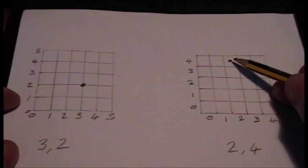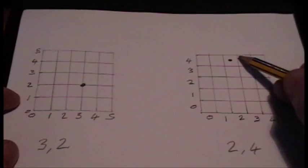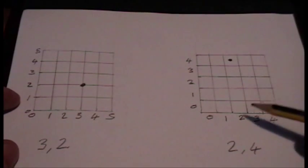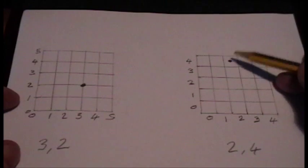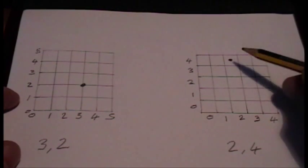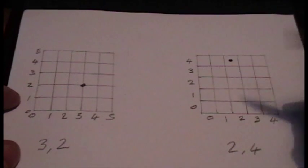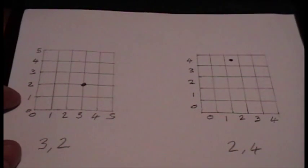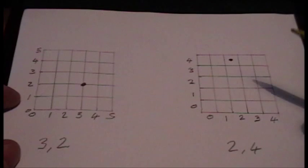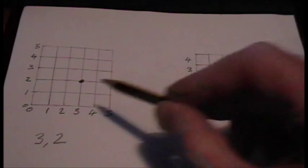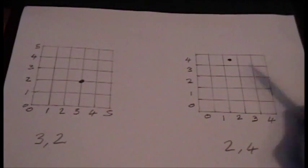This is a grid reference, which puts you in an area of a small square, and that would be 2 4. A six-figure grid reference would put you in an area about the size of a football field, and an eight-figure grid reference would put you in an area the size of a small room. That's the difference between a coordinate and a grid reference.